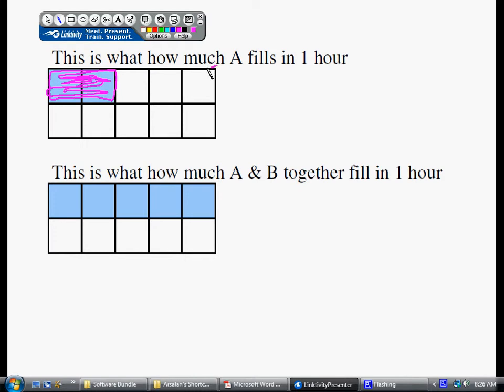So, obviously, this is what B does in one hour, all by itself. This is what they do together. This is what A does. B must be doing this much, otherwise they wouldn't get the job done.